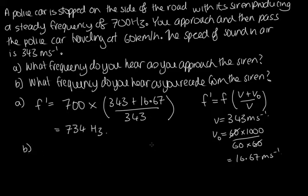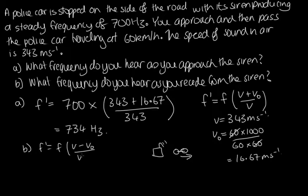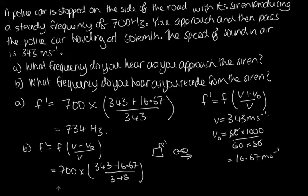For part b, the observer is now moving away from the source, so we change the sign: f dash = f × (v − v_o) / v. So f dash = 700 × (343 − 16.67) / 343. Solving this, we get 666 hertz.